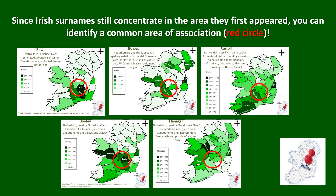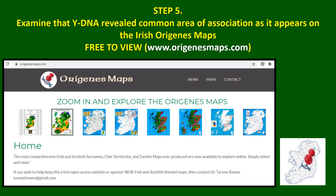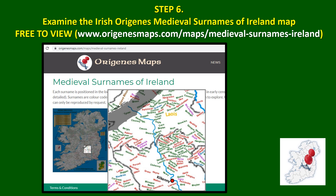So this is the area that you're going to explore. The next step: go to originsmaps.com and use the Irish Origins medieval surnames of Ireland map. Once you've selected the map, you can place the cursor over the area of interest and that will magnify that area.